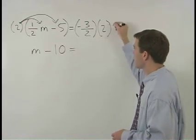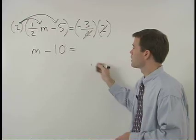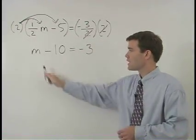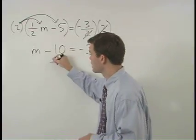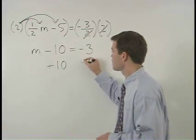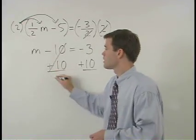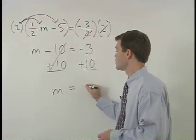On the right side, our 2's cancel and we're left with negative 3. Now to get m by itself, we just add 10 to both sides of the equation and m equals 7.